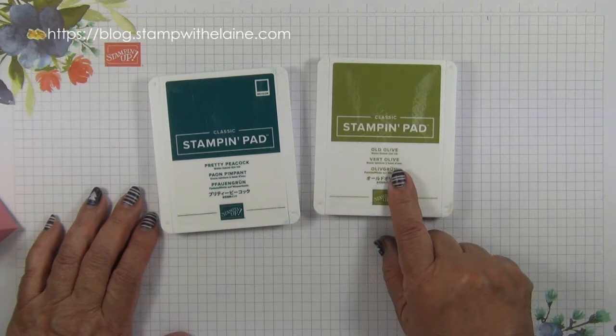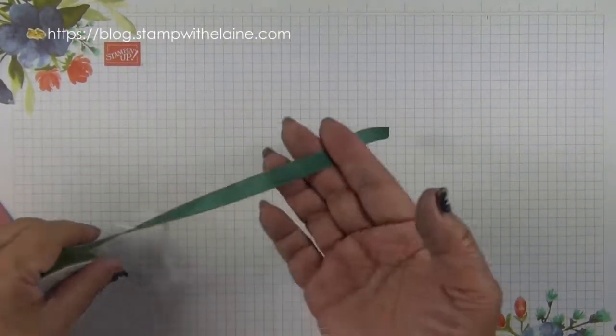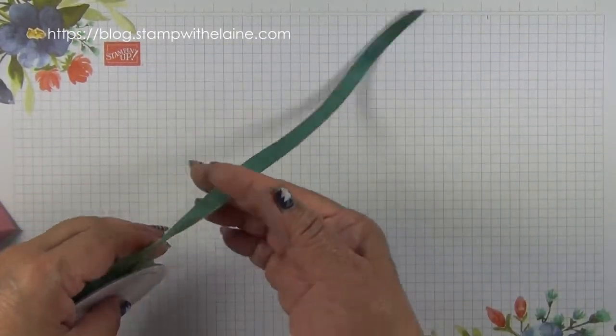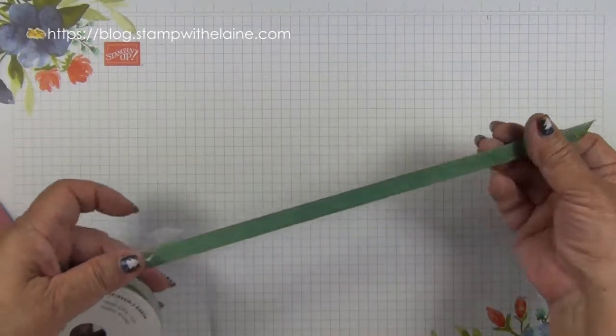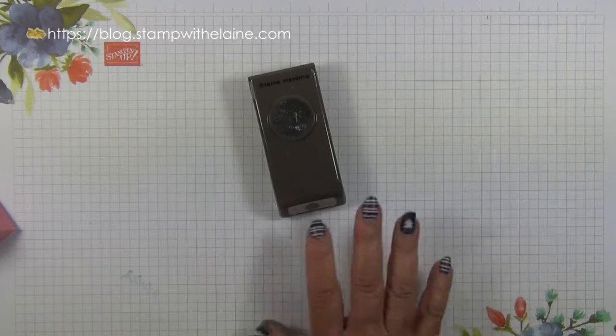Pretty Peacock and Old Olive ink, Whisper White scrap, this gorgeous 3/8 inch or one centimeter reversible ribbon in Old Olive and Pretty Peacock and a one inch circle punch.